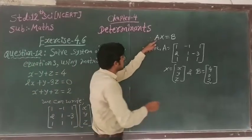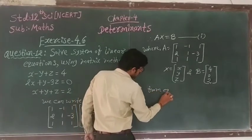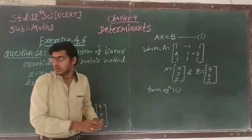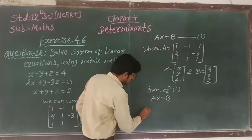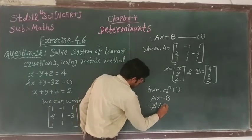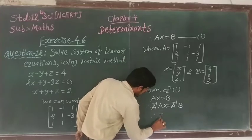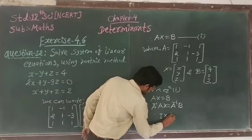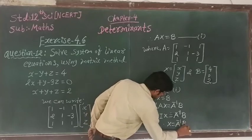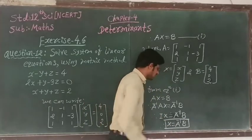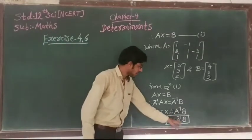From equation 1, we have AX equals B. Now we take A inverse of both sides, so we can write A inverse times A times X equals A inverse B. Since A inverse A gives the identity matrix, IX equals A inverse B. Therefore, X equals A inverse B. So we have to find A inverse first and then find the multiplication with B.